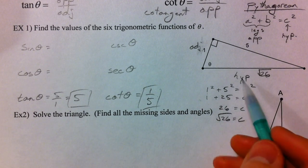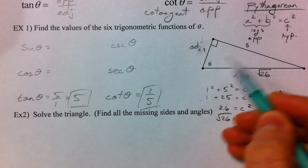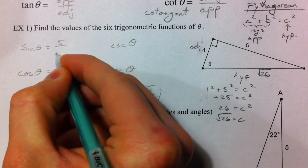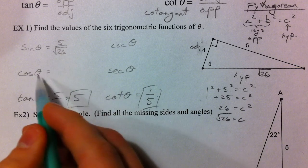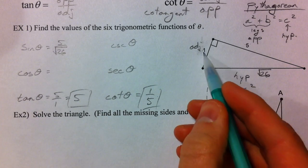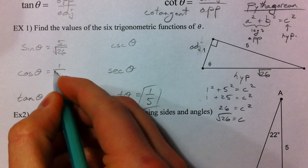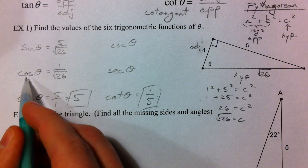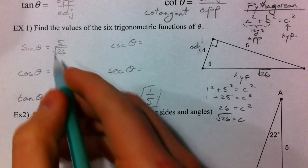Sine is the opposite of our angle over hypotenuse. 5 over root 26. Now, I'm going to rationalize this in a second. Cosine is the adjacent over the hypotenuse. 1 over root 26. That's cosine. The adjacent over the hypotenuse. And then, what I'm going to do is I'm going to take the reciprocal of those right away.